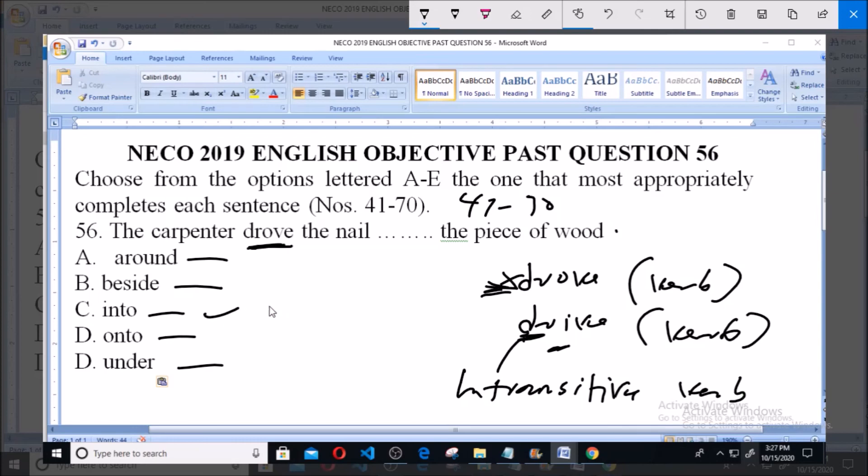The answer is 'into'. The carpenter drove the nail into the piece of wood. So option C is correct. Thank you and God bless you. Kindly subscribe for more videos.